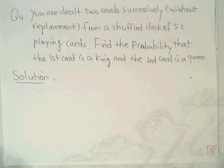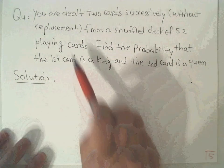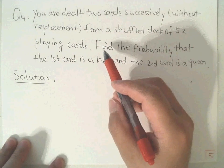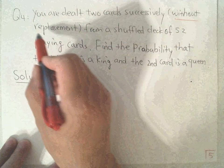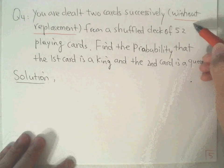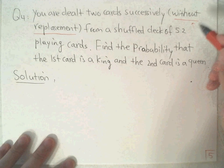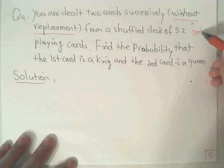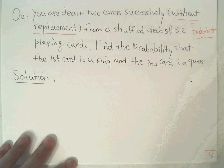Now for another question: we're going to deal with two cards picked successively without replacement. Without replacement means it's exactly a dependent relationship. Dependent means we have to use conditional probability.